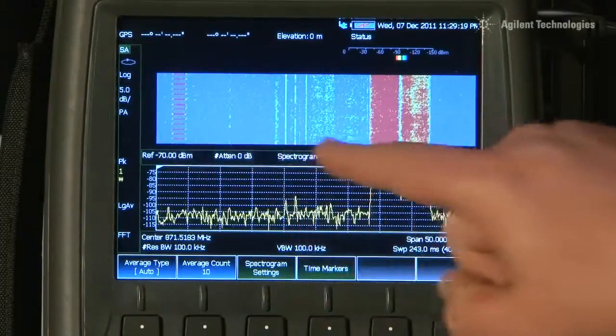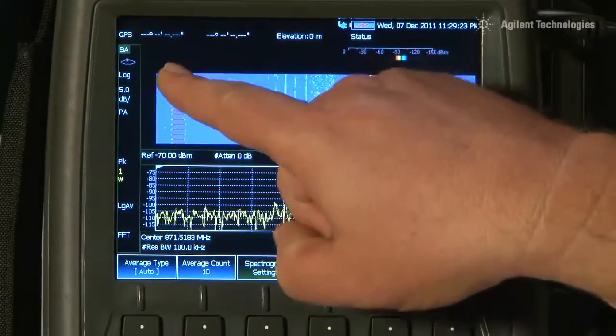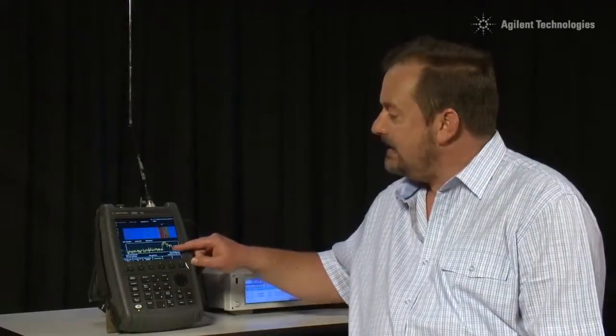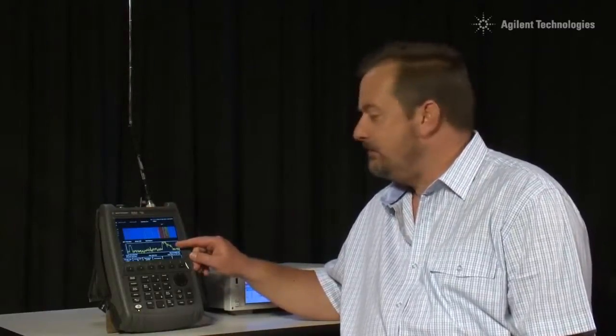The X axis still displays frequency, but the Y axis now displays time. Each new sweep of the spectrum analyzer trace is added to the stack of other traces, and the amplitude of the signal is indicated by the color.